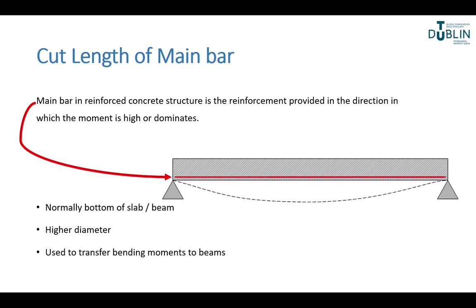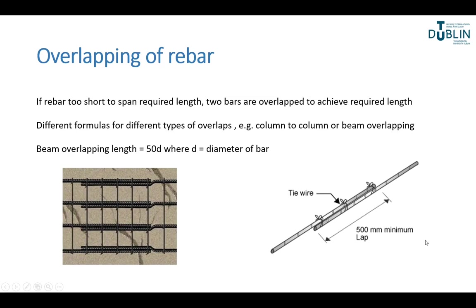The main bar in a reinforced concrete structure is the reinforcement provided in the direction where the moment is high or dominates. For a simple beam supported at either end with a load applied at the middle, the moment is going to be highest at the bottom, so that's where we have the bar going along the bottom. This bar acts in tension and helps the beam from deforming. Without it, you're liable to get cracks and even failure.